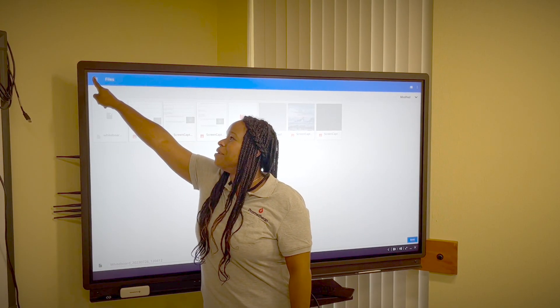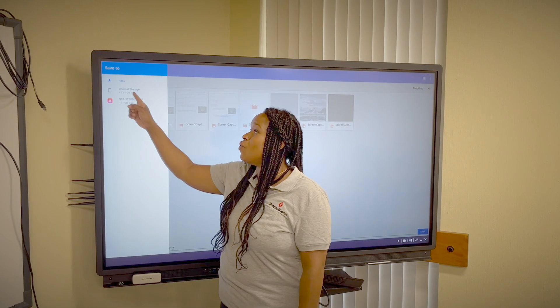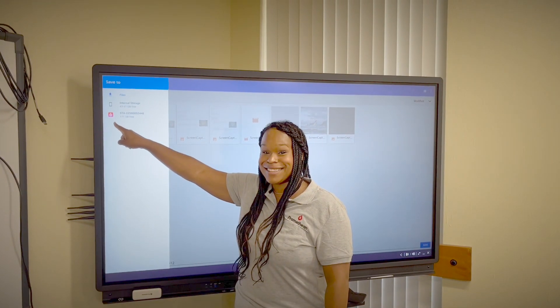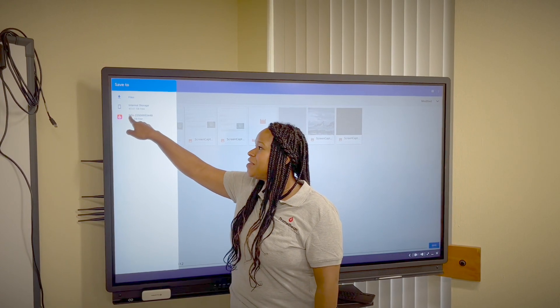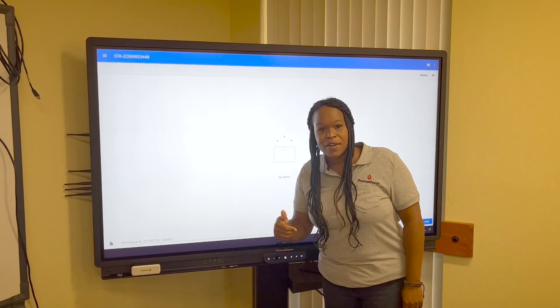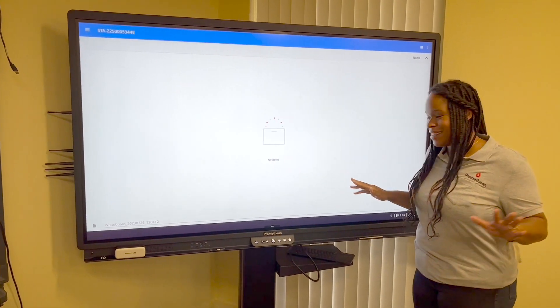So we're going to touch right up here at this hamburger menu. Now I know you're going to feel a little tempted to want to touch internal storage, but notice right here, there's the Promethean desktop app. You're going to touch this option, which will now make it so that you save internally into your Promethean desktop app, and you can find it anywhere in the cloud.